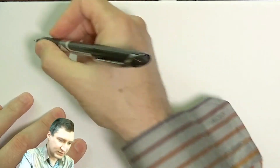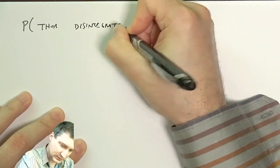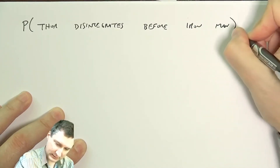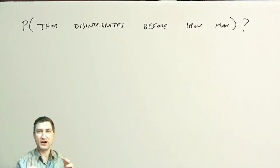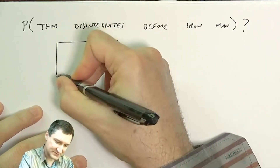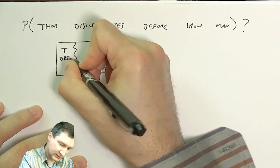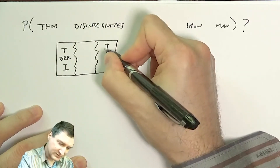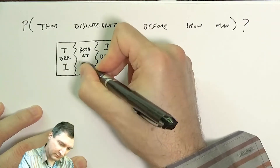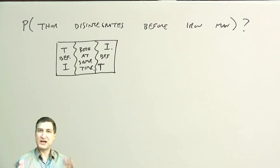Here's another problem: what is the probability that Thor disintegrates before Iron Man? This requires a little thought. There are basically three possible events that make up the sample space: Thor before Iron Man, Iron Man before Thor, and both at the same time. Let me solve this in two different ways.